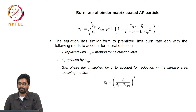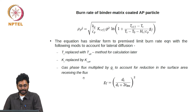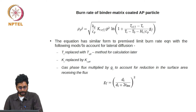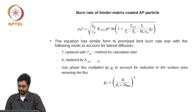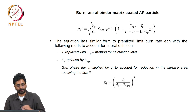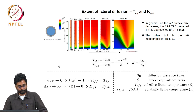Now we move on to the third part of the theory, which is a model for calculating r_dot_i — the burn rate of each individual binder-matrix-coated AP particle. The equation required for predicting r_dot_i has a similar form to the premixed limit burn rate equation with modifications to account for the effects of lateral diffusion. T_f is replaced with an effective temperature, and the reaction rate is replaced with an effective reaction rate, with the gas-phase flux multiplied by a geometric factor to account for reduction in the surface area receiving the flux.